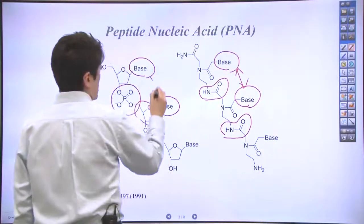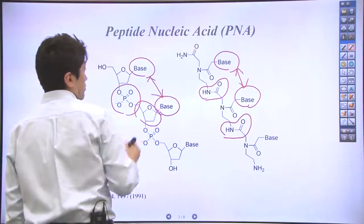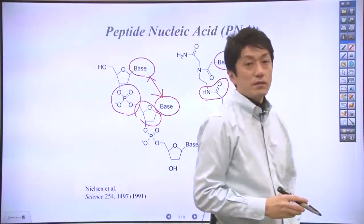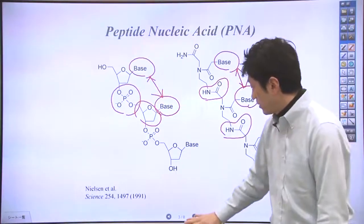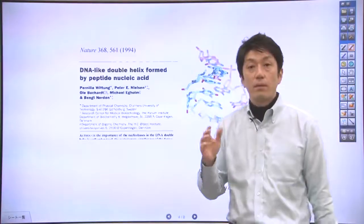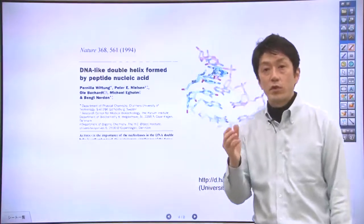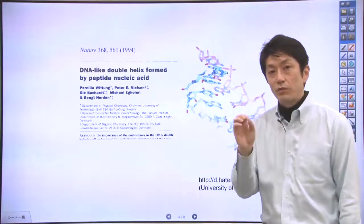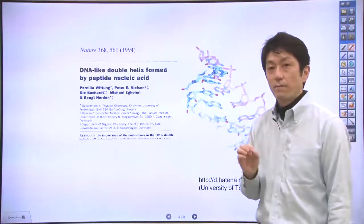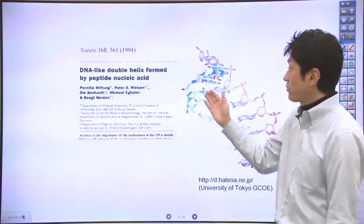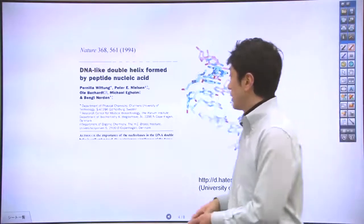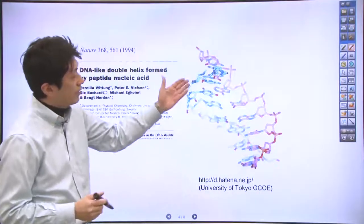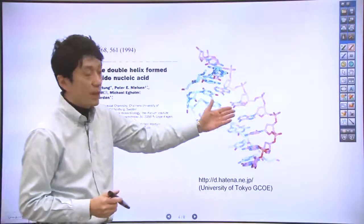So these two distances are approximately the same. Surprisingly, this PNA pairs with DNA and forms a double helix, and inhibited DNA function. Here is a structure of the PNA and DNA pair.